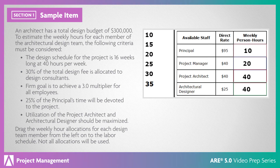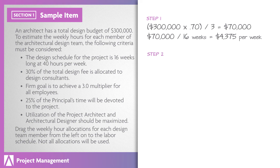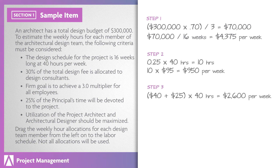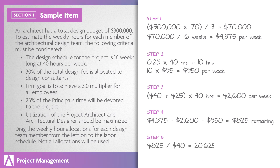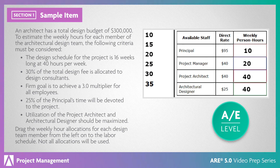The correct answer: in order to determine the number of hours to allocate for each design team member, begin by calculating the weekly direct rate budget and removing 30% for design consultants. This is done by dividing the maximum labor budget with design consultant fees removed by the company multiplier, then dividing by the weeks of the project. Allocate the principal's weekly hours to the project. The utilization rates of both the project architect and the architectural designer are to be maximized, meaning each will allocate 40 hours per week on the project. This will provide the remaining weekly budget to allocate to the project manager. Divide the $825 remaining by the project manager's rate. This is an AE-level item because it requires you to evaluate the design budget, allocations for consultants, and company multiplier in order to determine the appropriate number of hours for each design team member.